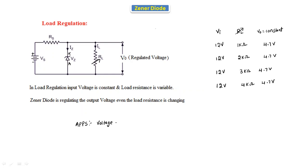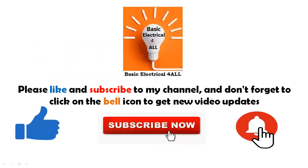The application of the Zener diode is simply as a voltage regulator — it acts as a stabilizer, stabilizing the voltage. If any fluctuations occur in terms of variable input voltage or variable load resistance, the Zener diode regulates and the output voltage remains constant. This is about the Zener diode V-I characteristics and its application as a voltage regulator. In the next class we will discuss more topics.